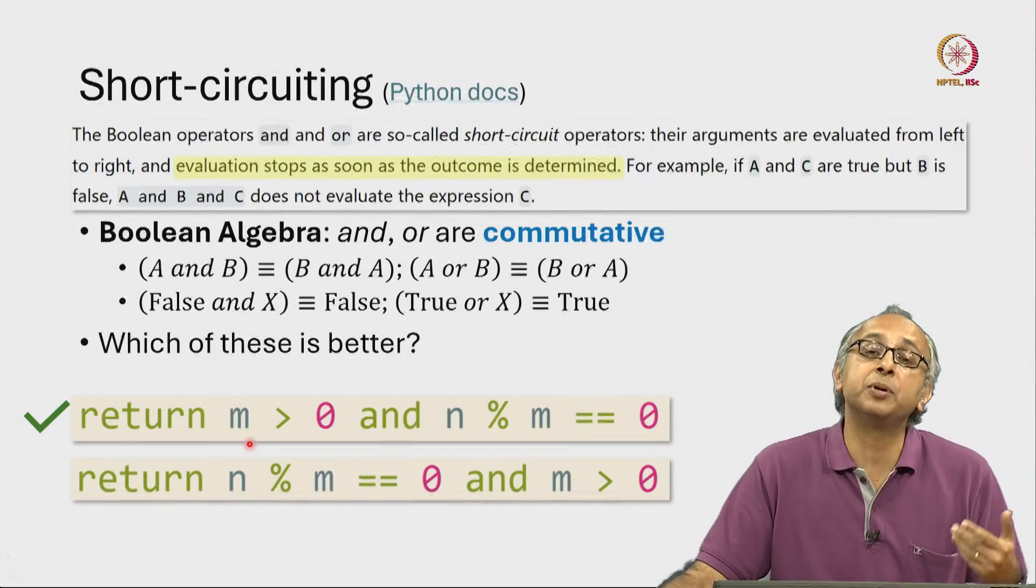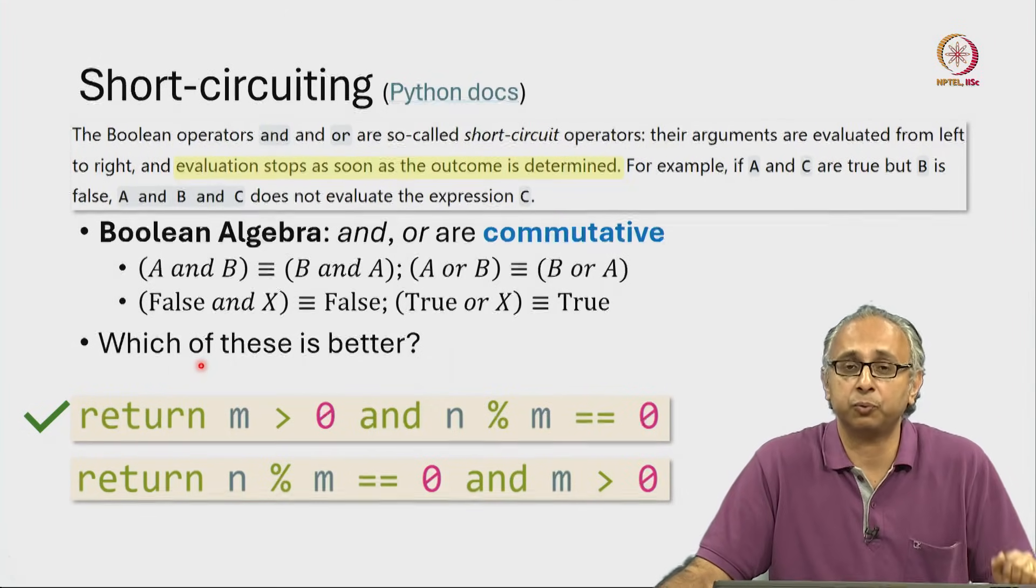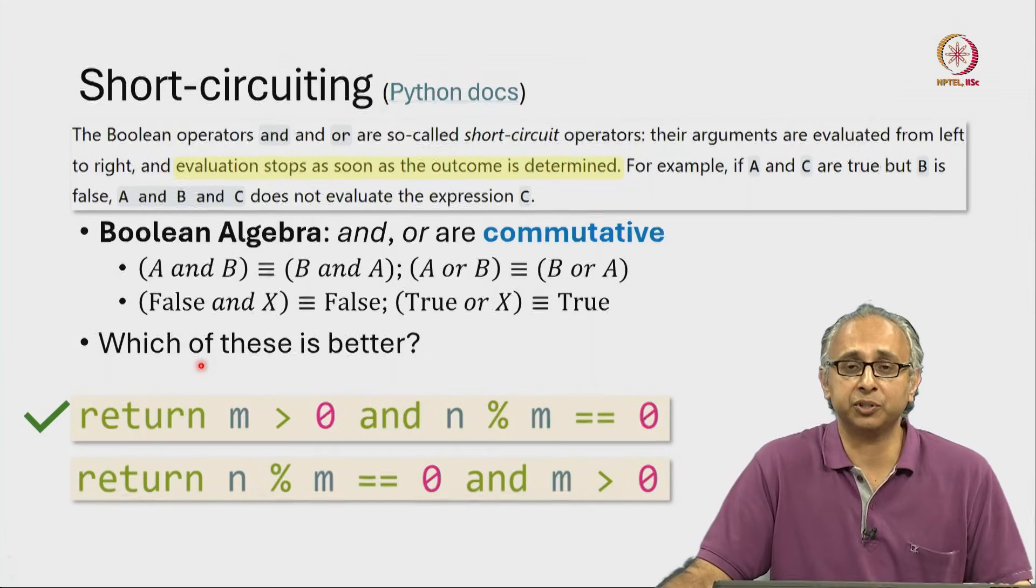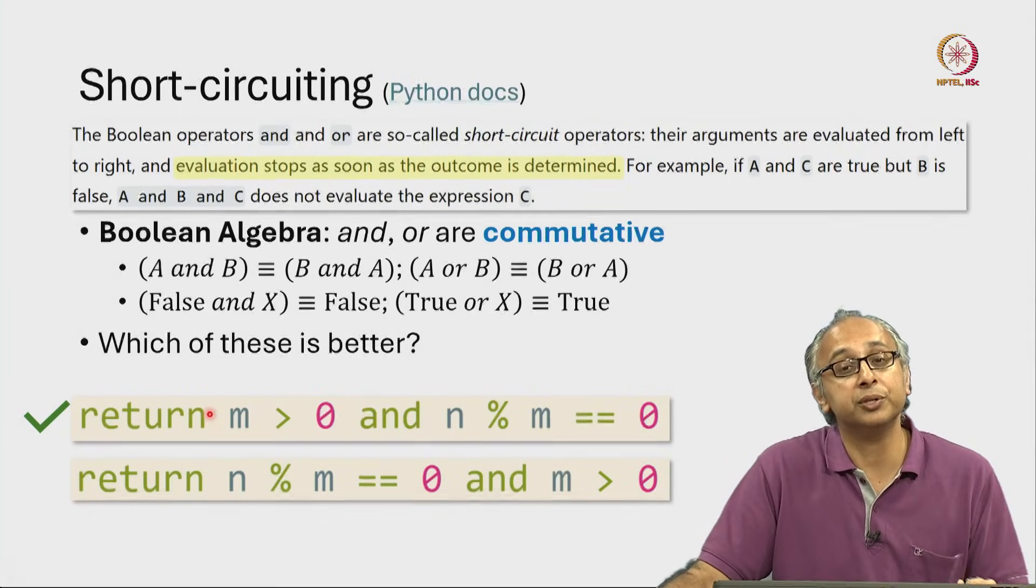Now, what if m happened to be zero? Maybe the previous code actually checked for that and this is not a worry. But we do not know what that previous code is. Just looking at this code, we should imagine what if m was zero.